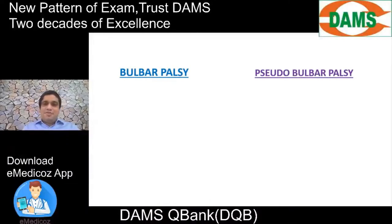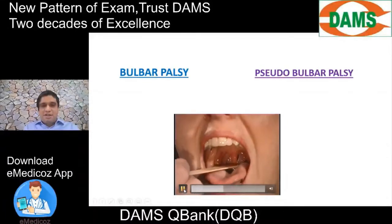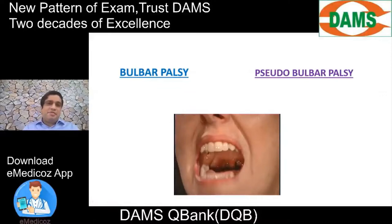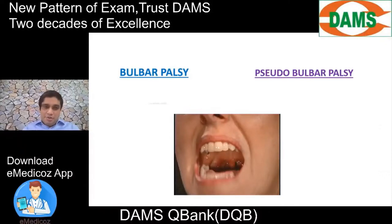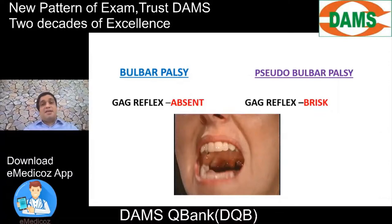Another difference between bulbar and pseudobulbar is the gag reflex. When you stimulate the posterior pharyngeal wall with a spatula, there should be a cough response. In bulbar palsy, the lesion is nuclear — LMN — so the gag reflex is absent, causing great difficulty in swallowing food or water. In pseudobulbar palsy, the lesion is corticobulbar — UMN — so the gag reflex is very brisk; the moment you stimulate the posterior pharyngeal wall, the person may choke.